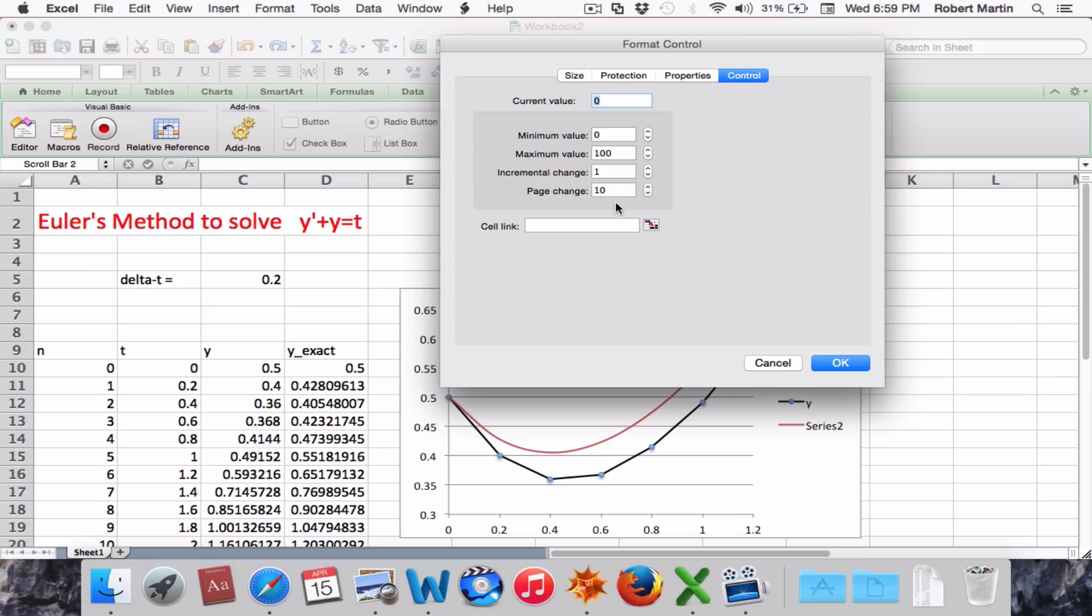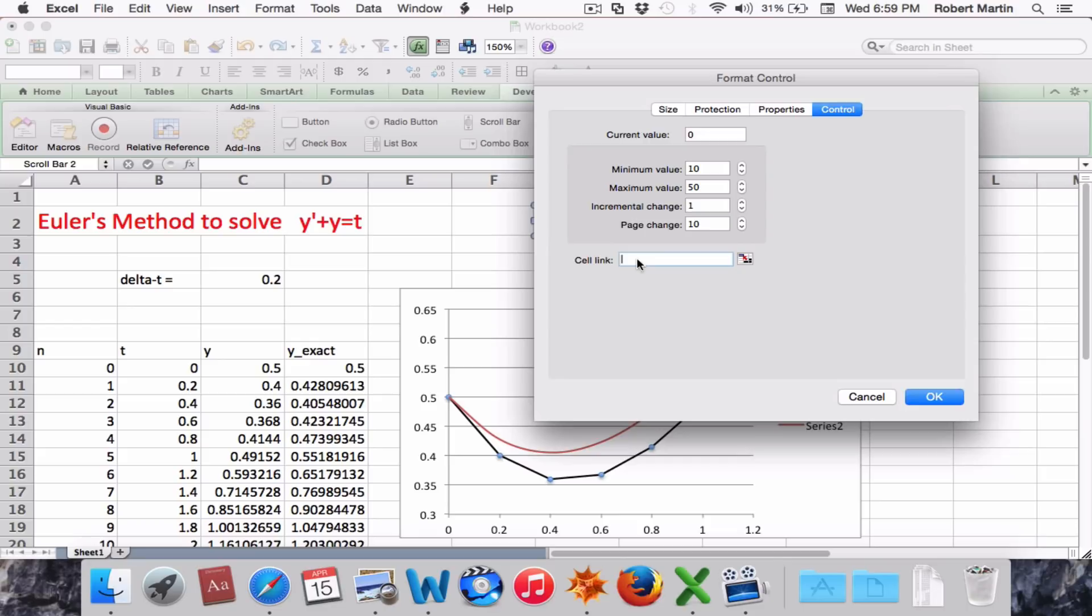And we're going to choose a minimum value of 10, maximum value of 50. The cell link, where we want the value to be inserted, we click cell link and I will choose the cell right above my delta t value. And OK.